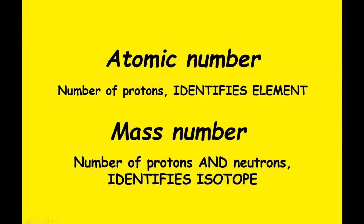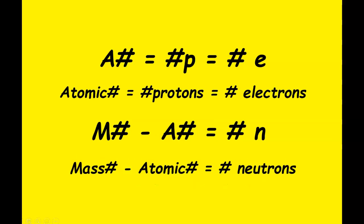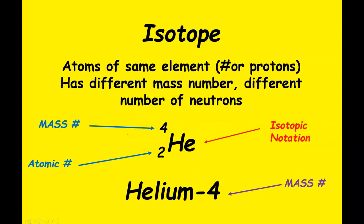You need to be able to find the number of particles in any element. The acronym you will use is APE MAN. A is the atomic number, which equals the number of protons, which also equals the number of electrons — this is why atoms are neutral, because the number of positive protons equals the number of negative electrons. M is the mass number, which minus the atomic number (number of protons) gives you the number of neutrons.